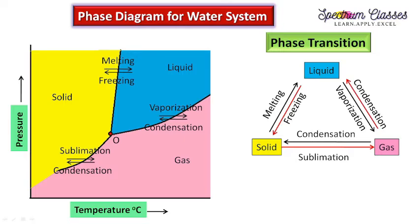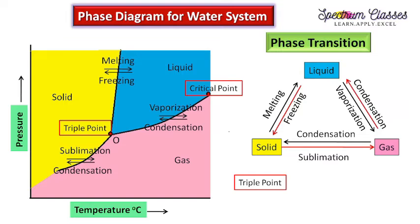Beyond the critical point, on increasing the pressure the gas phase will not be liquefied — this is called the supercritical state. So the vaporization/condensation curve is drawn only up to the critical point and beyond that we cannot draw this curve. These are the basic important features of a phase diagram.